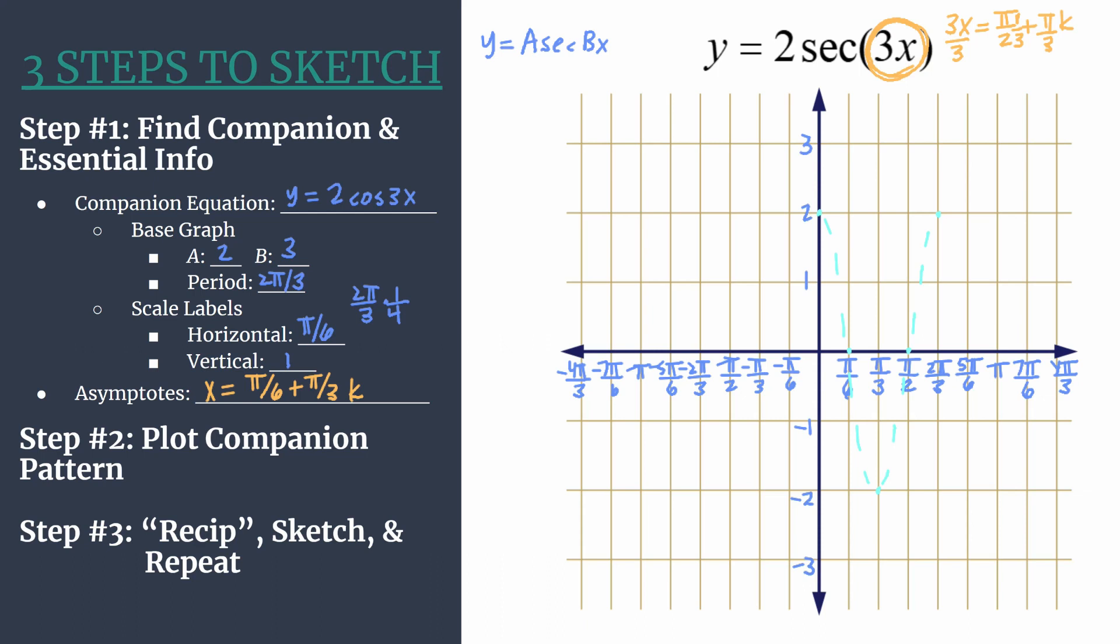Now we're ready for step 3 where we will recip, sketch, and repeat. Anytime you have a leading coefficient other than 1, you aren't technically taking the reciprocal of the points that we have graphed. We know what the secant graph looks like and we've already applied the vertical stretch factor, that 2 out front. So we aren't taking literal reciprocals of the points, but we know that the maximum should turn into a local minimum.